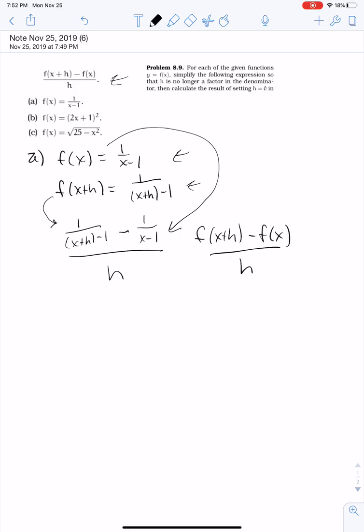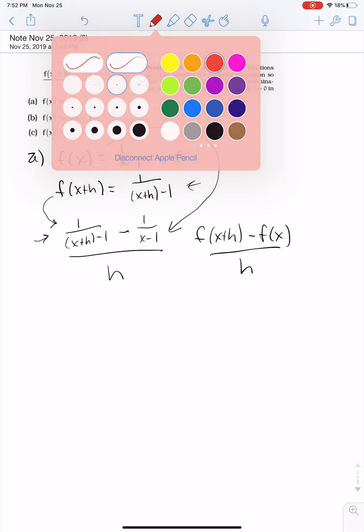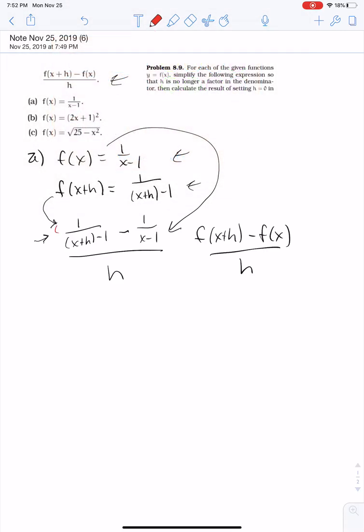So I need to get h out of the denominator. Let me work on the numerator and add these two together. I need to get common denominators. I'm going to multiply this one with x minus 1 over x minus 1, and this one I'm going to multiply with x plus h minus 1 over x plus h minus 1.